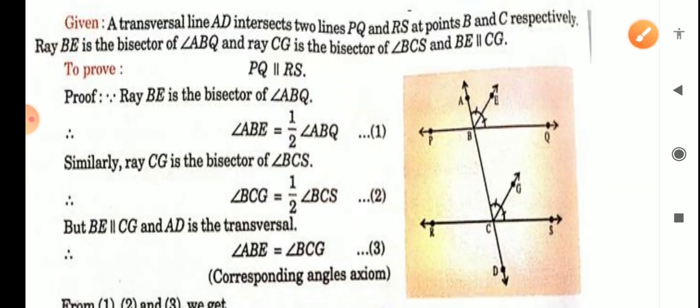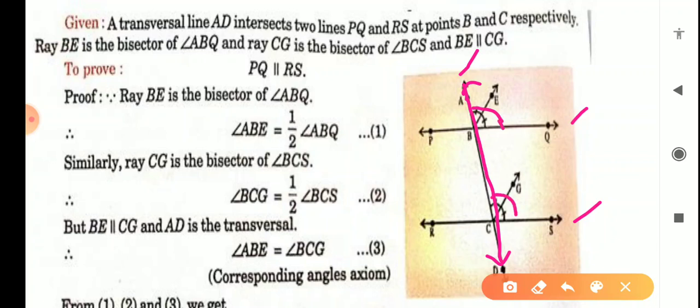In this question, this is your figure. What is given to us? The 2 lines are PQ and RS. AD is the transversal of these lines. When this transversal intersects these 2 lines, then corresponding angles are formed, and the bisectors of the corresponding angles are parallel. The bisector of the first corresponding angle is BE, and the bisector of the second corresponding angle is CG. These bisectors are given to be parallel.